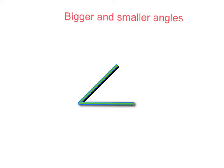Some angles can be quite big, and some angles can be quite small. And what we need to be able to figure out is which angles are smaller and bigger than one another, and be able to order them.